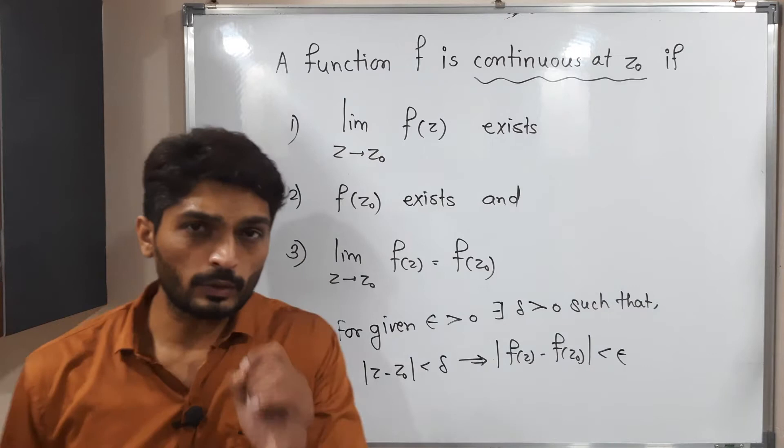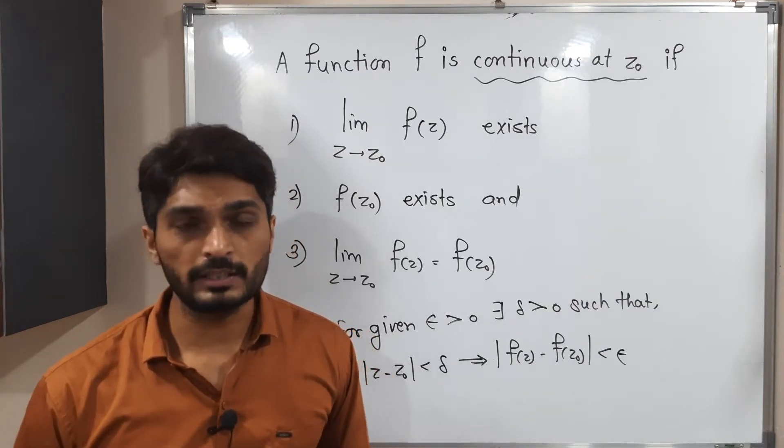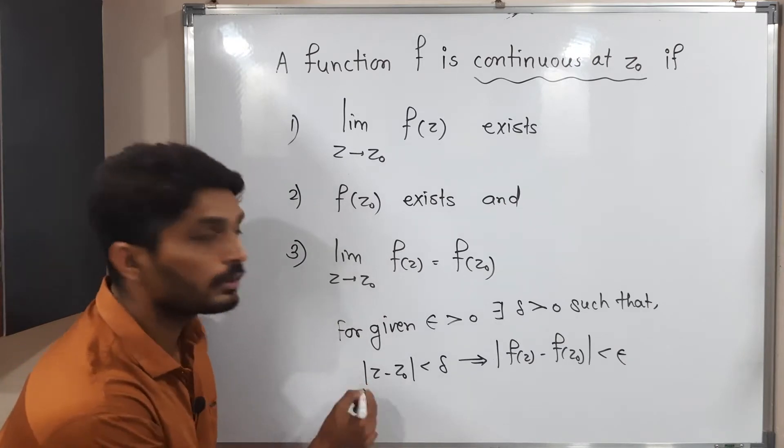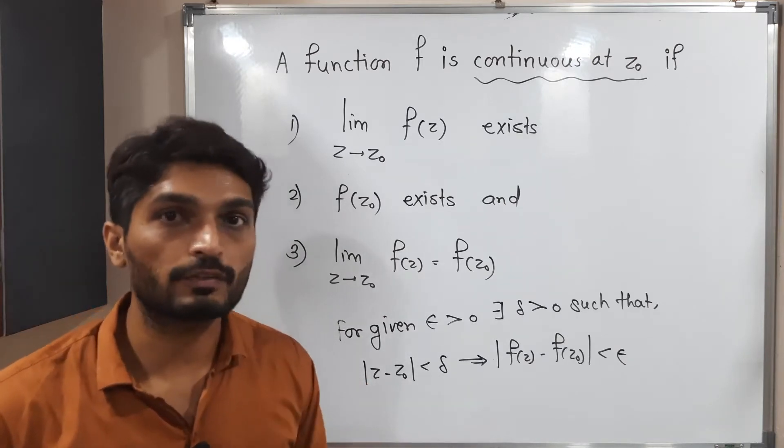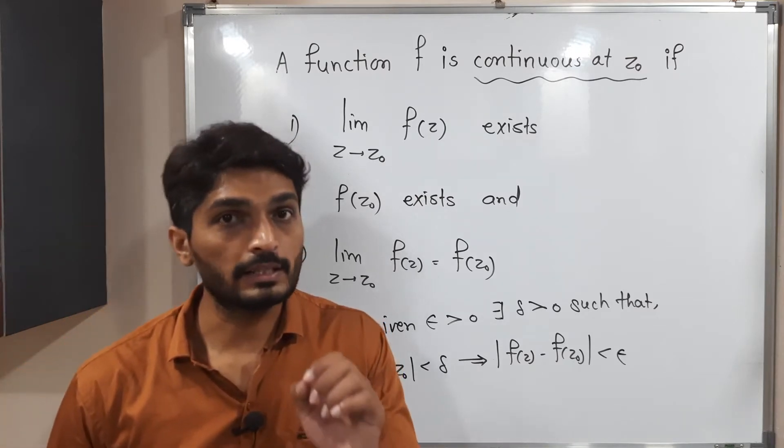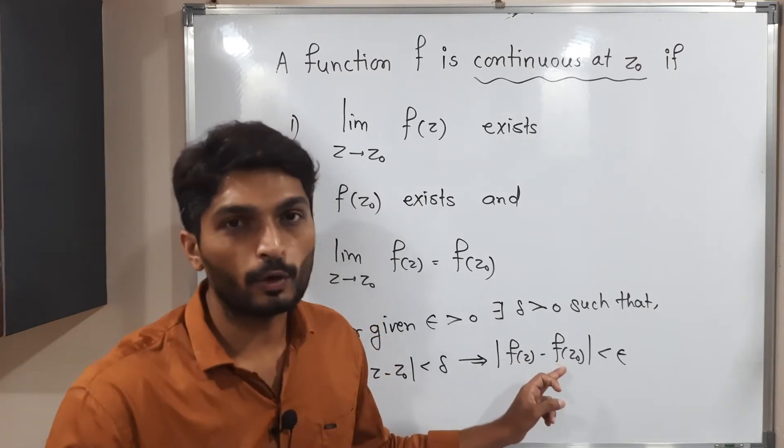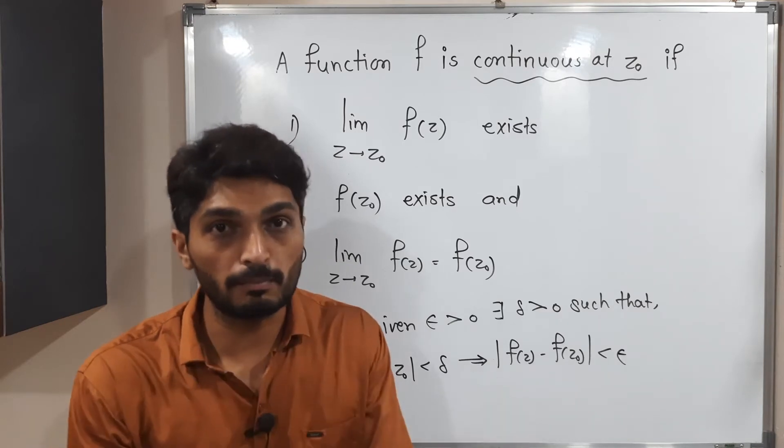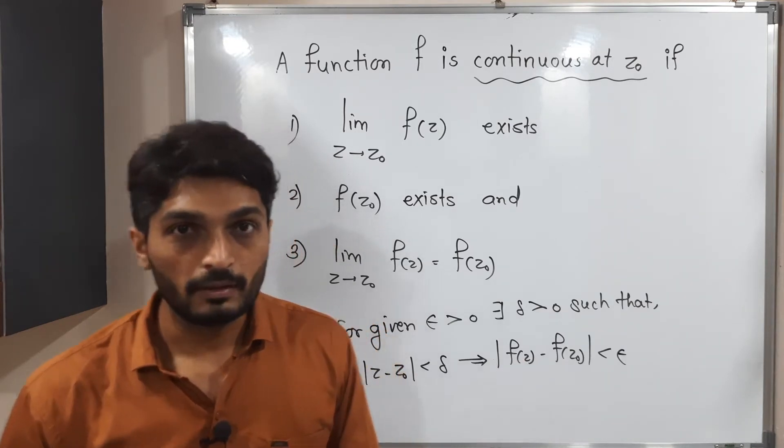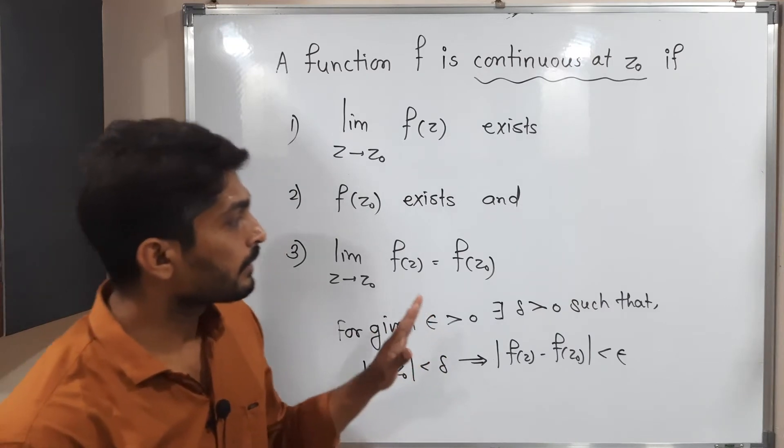Did you notice the difference between definition of limit and continuity? Same definition we have. Just here in case of limit, we write 0 less than, but in case definition of continuity, we do not write that thing. As well as the second difference is in case of limit, we write L or W naught something, some fixed number. But here we write f of z naught. So this is the main difference between them. Then we say the function is continuous.